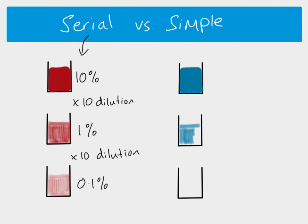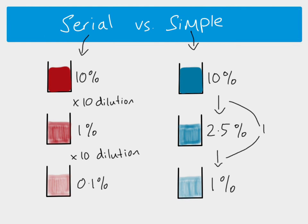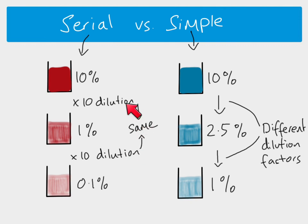A simple dilution is a little bit different. Here are three solutions we're going to make. We start off again with a 10% solution, but the second solution is 2.5% and the third is 1%. The important thing here is that as we go from one to the next, we have different dilution factors.